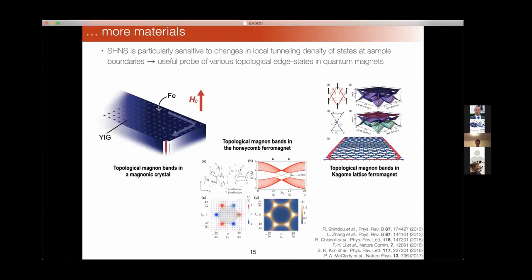This idea can be carried forward for many types of topologically non-trivial quantum magnetic phases proposed over the last several years. This kind of noise spectroscopy is particularly useful for detecting the emergence of edge states and could be generalized to many different types of topologically non-trivial quantum magnetic phases.